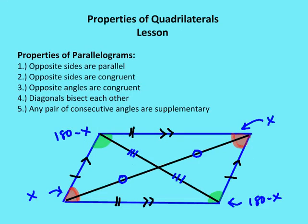So, properties of parallelograms — I've got five properties we're going to talk about. We'll go into a proof of some of the properties later in another section, so we're just going to review the properties today. The first property of a parallelogram is that opposite sides are parallel.